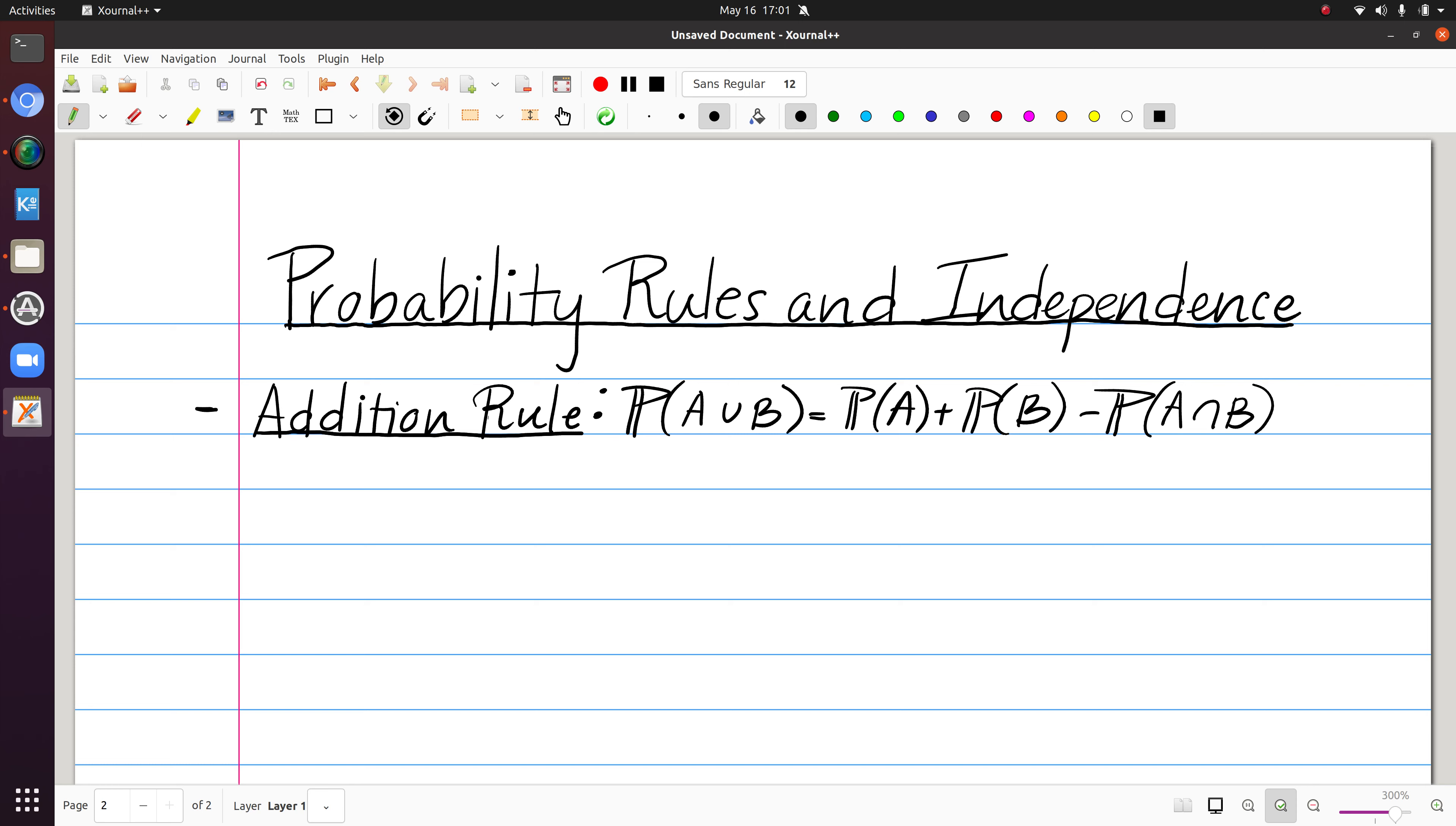And one of the things I want to make sure is clear here are some of this notation. So I would read this as the probability of A or B, and we're saying that's equal to the probability of A plus the probability of B minus the probability of A and B. Set notation-wise, this is called union of A and B, and this is called the intersection.